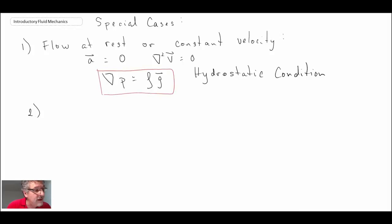Another special case that can exist is if you have rigid body translation or rotation. That would be where the fluid is moving, but it's all moving as a solid body movement. So there's no relative motion within the fluid. All of the fluid particles are moving together. For example, you put all the fluid in a bucket and you move it.